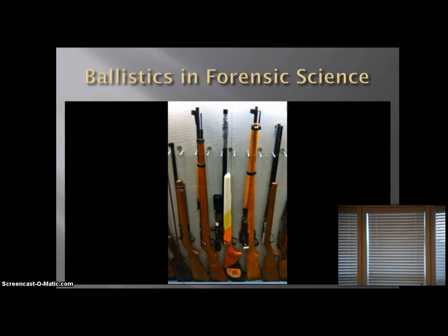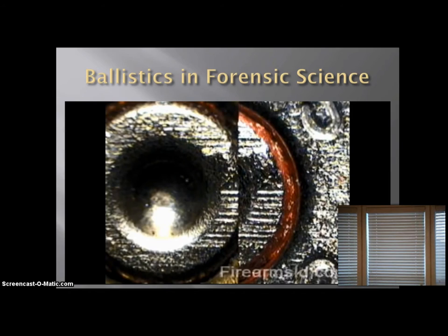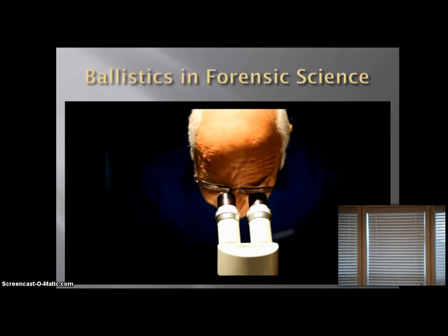Each rifle barrel is unique, even if made by the same manufacturer in the same product run. A firearms examiner can compare the unique characteristics of a rifle barrel to a bullet by firing test bullets from the suspected weapon and then comparing the evidence bullet to the test bullet. A comparison microscope is then used to more closely examine the striations on each bullet to see if there is a match.